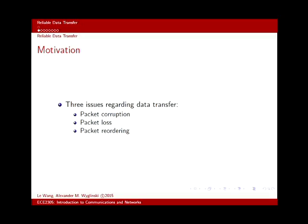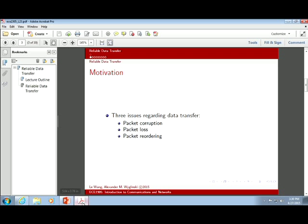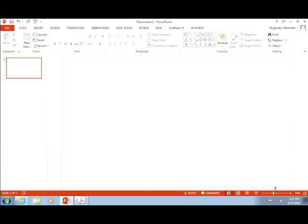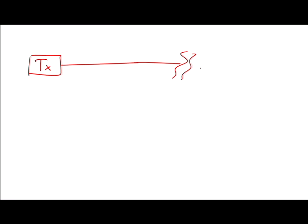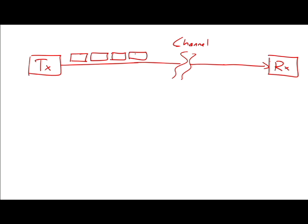So I'm going to draw this. We have a transmitter, a channel, and a receiver. Packets 1, 2, 3, 4 are going from transmitter to receiver — no assumption whether it's wired or wireless. Many things can happen. First, there is packet corruption. What corrupts a packet? At that moment, there's suddenly a very large amount of noise or some sort of impairment in the channel.